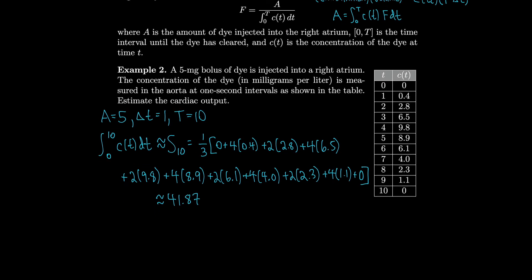We'll say that capital F, the cardiac output, is A divided by the integral from zero to ten of the concentration. So that's five, as we calculated before, divided by 41.87, which is about 0.12 liters per second. And if we want, we can convert that into 7.2 liters per minute.